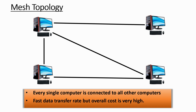Mesh topology is not easy to implement — it is complicated and the cost is quite high. Imagine a large firm with 200 PCs all directly connected to each other. However, the data transmission is very fast and there is very little chance the network will go down. That's the biggest advantage of mesh topology. I hope all the topologies are clear — do subscribe to the channel!